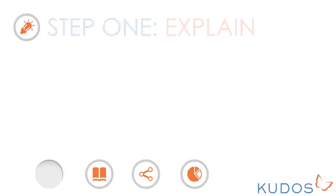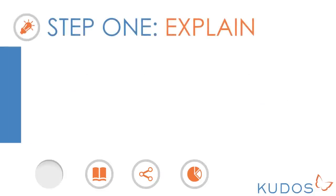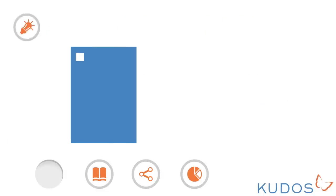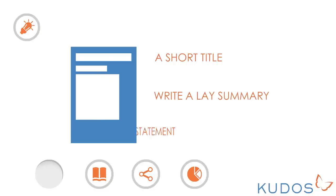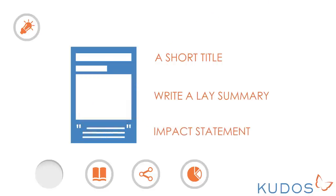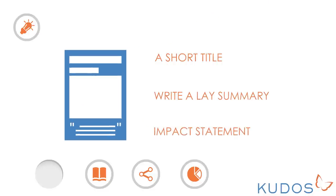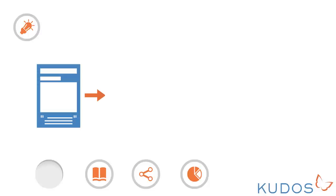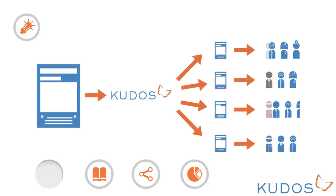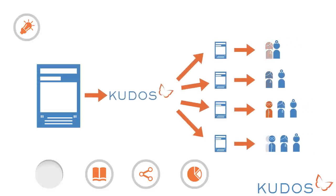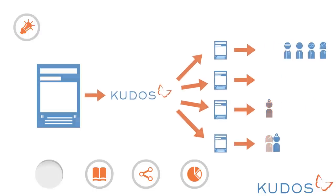Step 1: Explain. Give your publication a short title, write a lay summary and an impact statement. QDOS then distributes this all over the web, linking back to your publication to help more people find and understand your work.